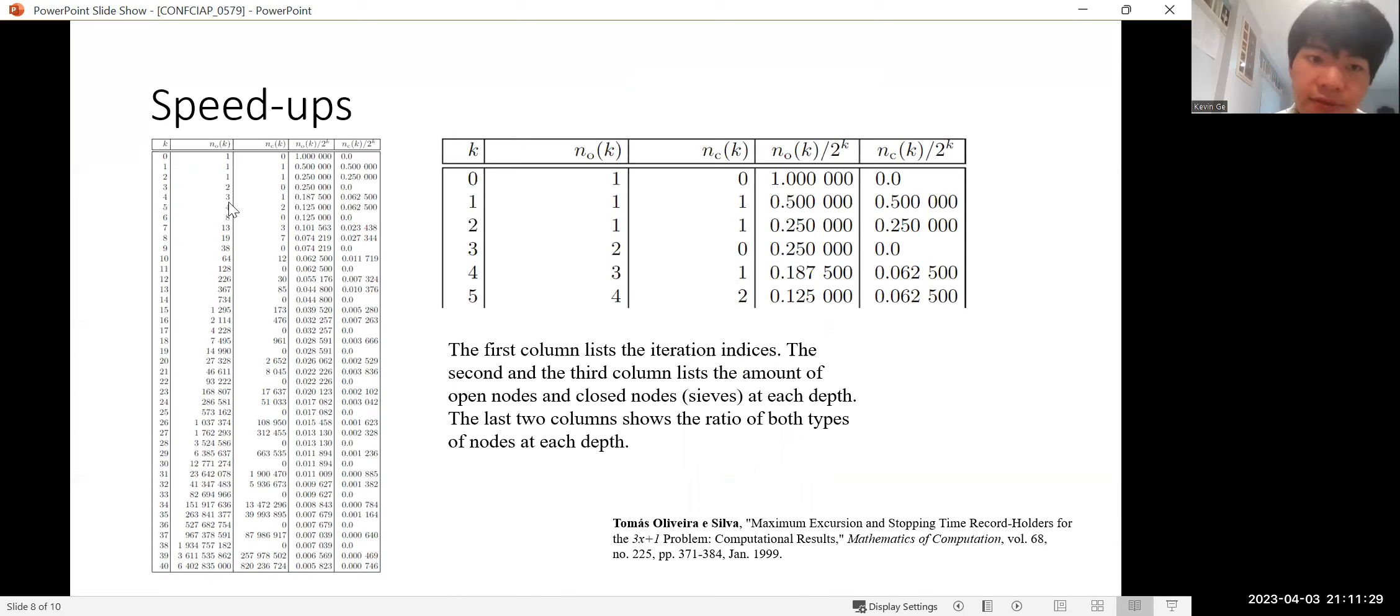So this diagram is from earlier in the 1999 paper from this Portuguese author. The speedups for sieves are implemented per depth. So for example, the first column k denotes the depth of the tree. And o means how many nodes are open. And c means how many nodes are closed.